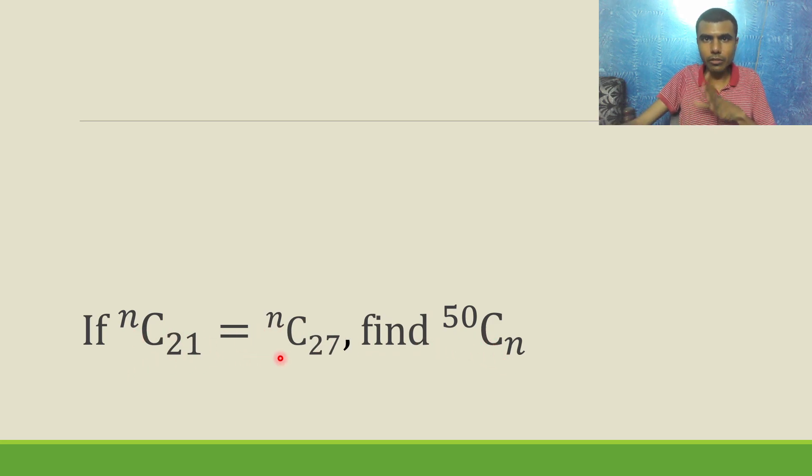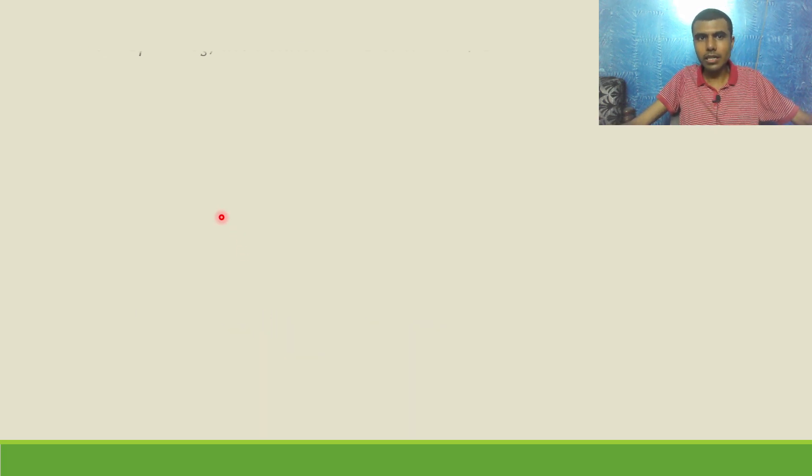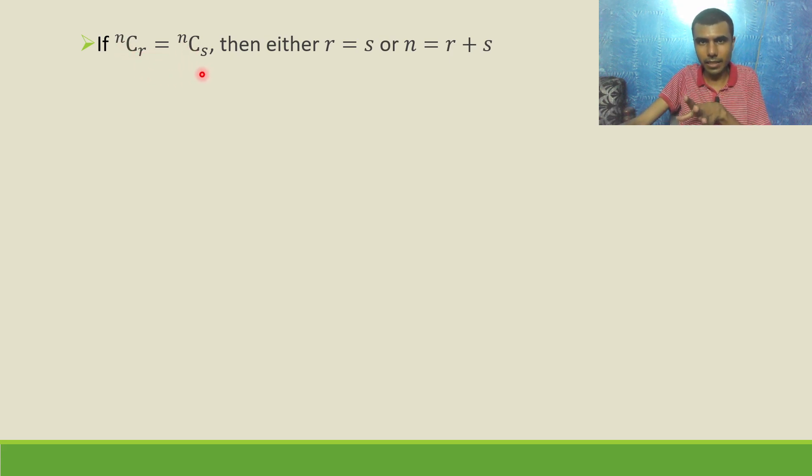First, using this condition, I'm going to find out the value of n. Now there is a condition that states: if ⁿCᵣ = ⁿCₛ, then either r = s or n = r + s.